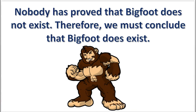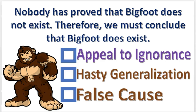Next practice problem. What fallacy is committed in this argument? Press pause. The answer will appear in 3, 2, 1. The appeal to ignorance. No proof against a thing does not provide evidence for a thing.